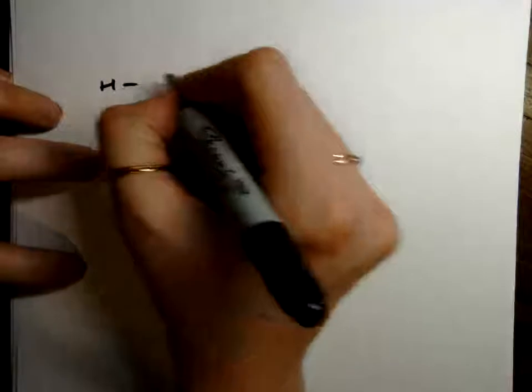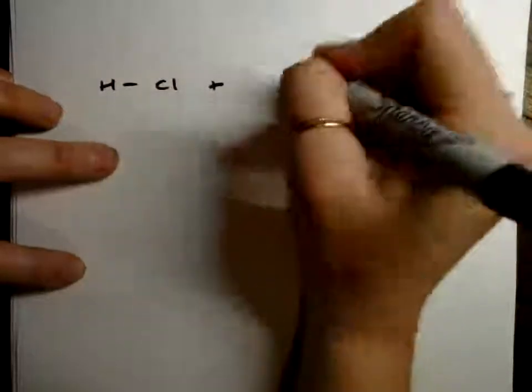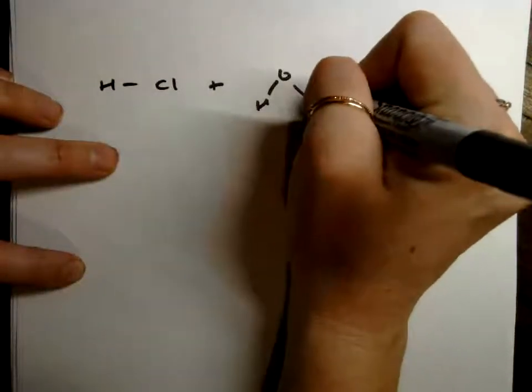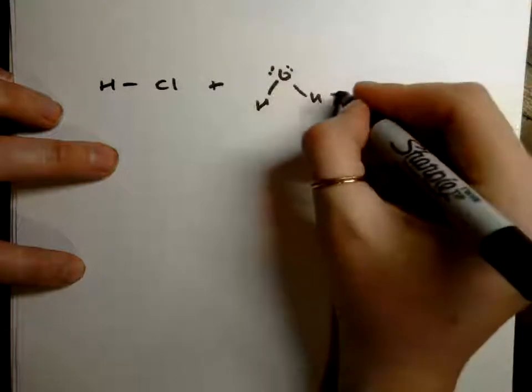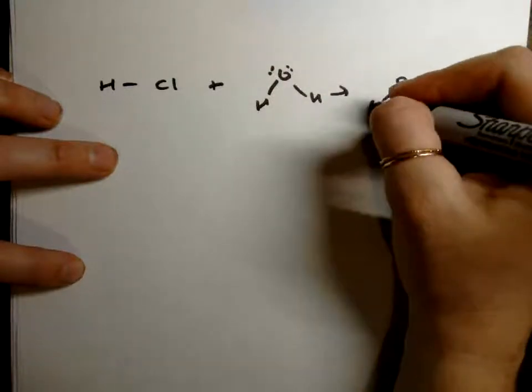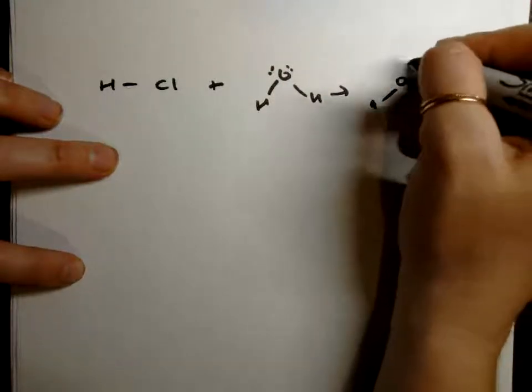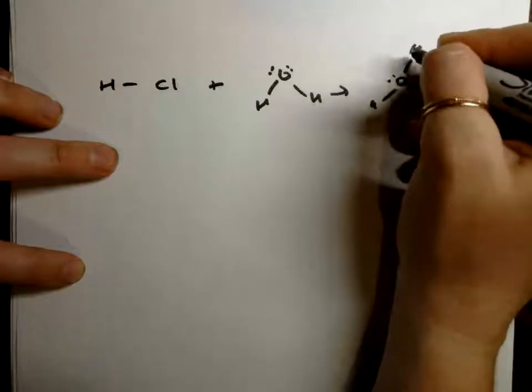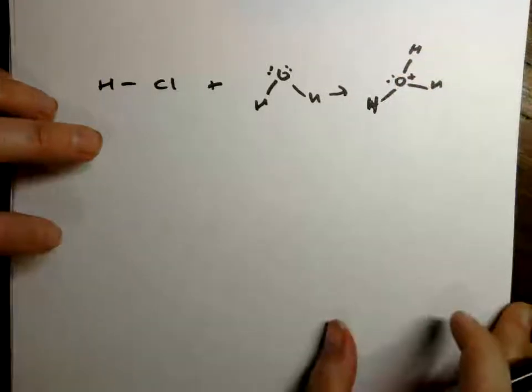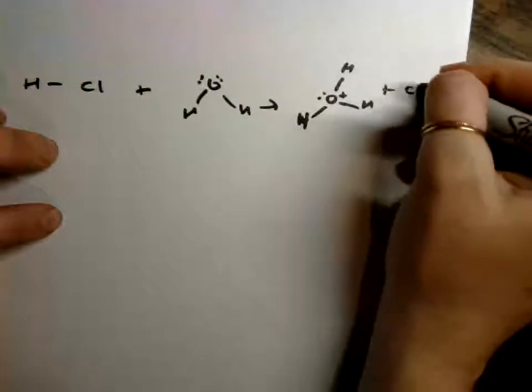So many of us have seen this reaction before, HCl plus water, and we've heard that it dissociates into a hydronium ion with one lone pair. It's positively charged, you can check the formal charge, and Cl minus.